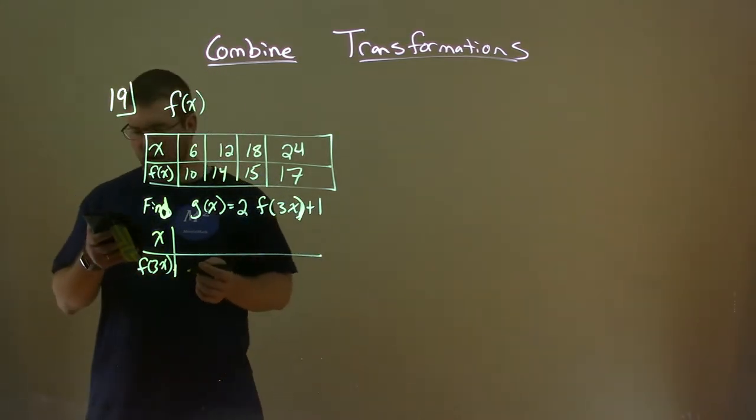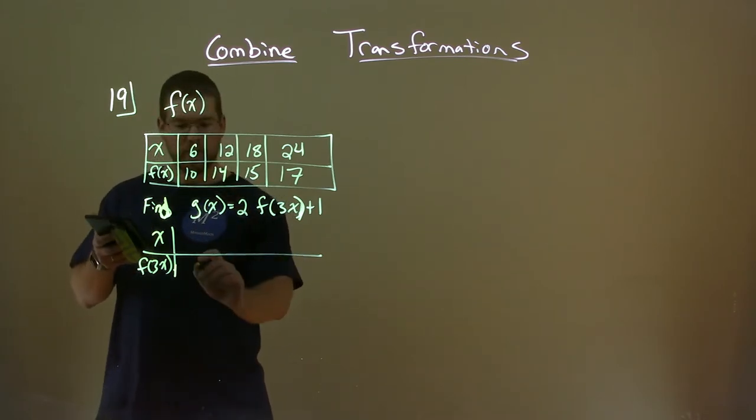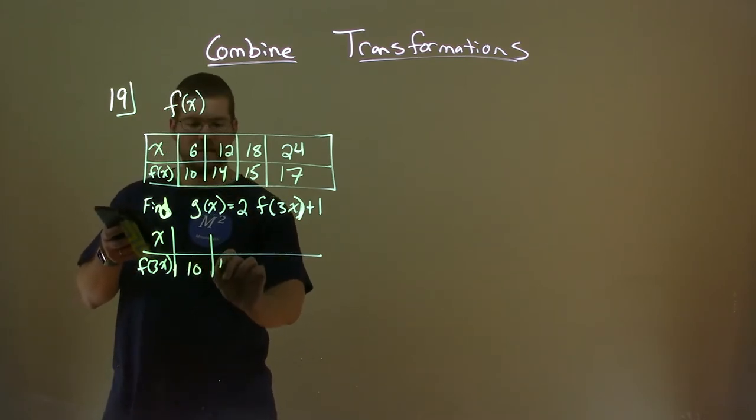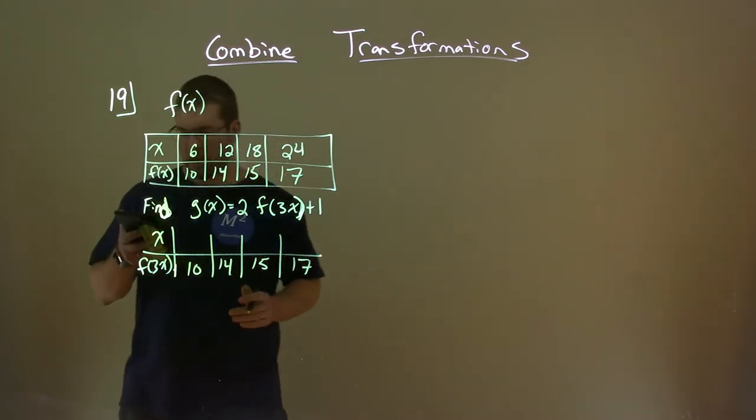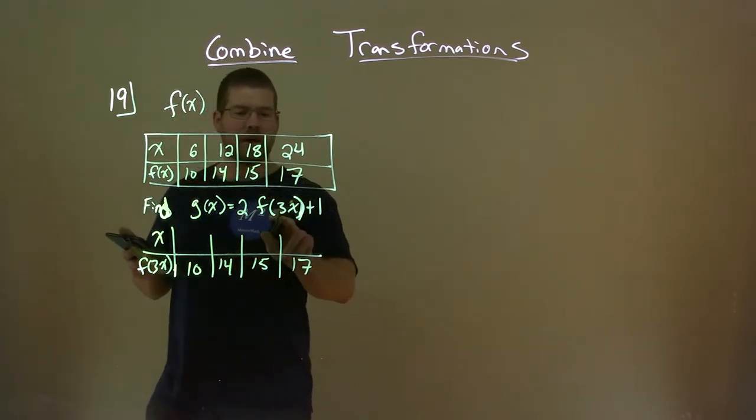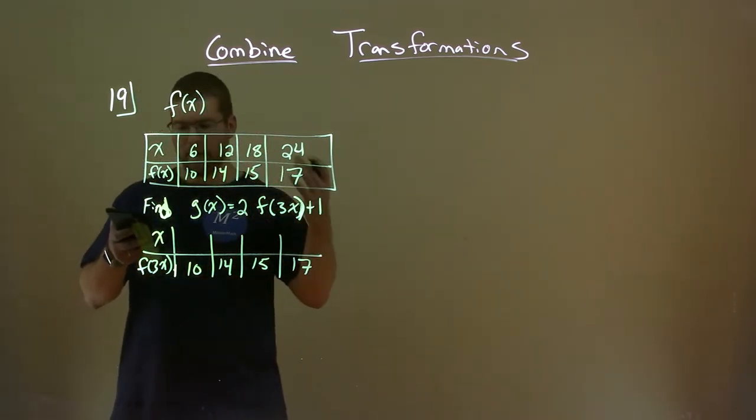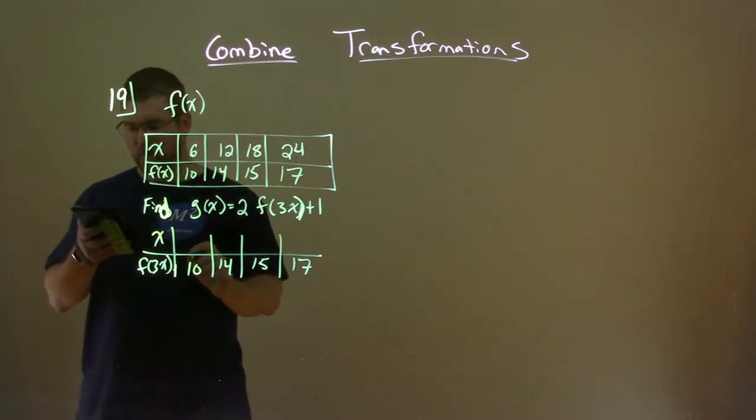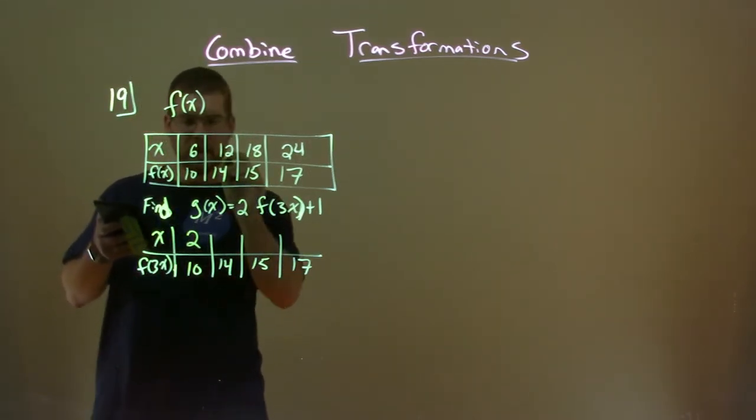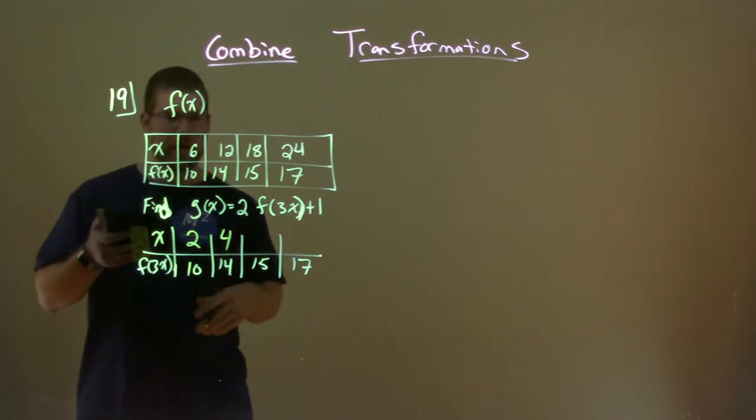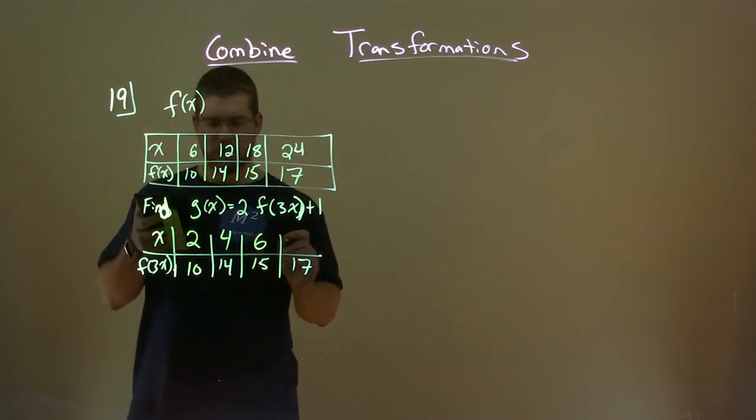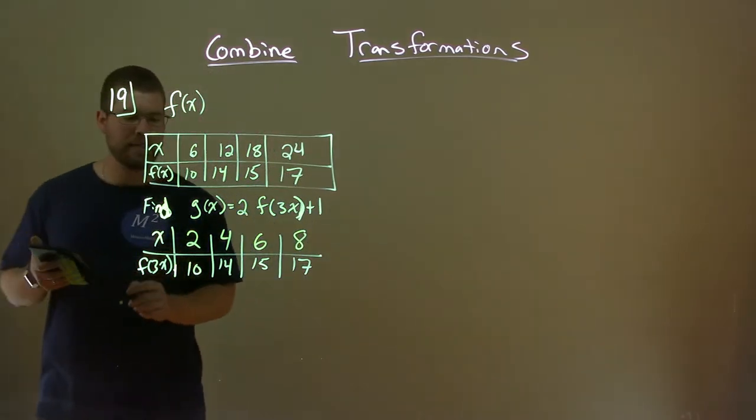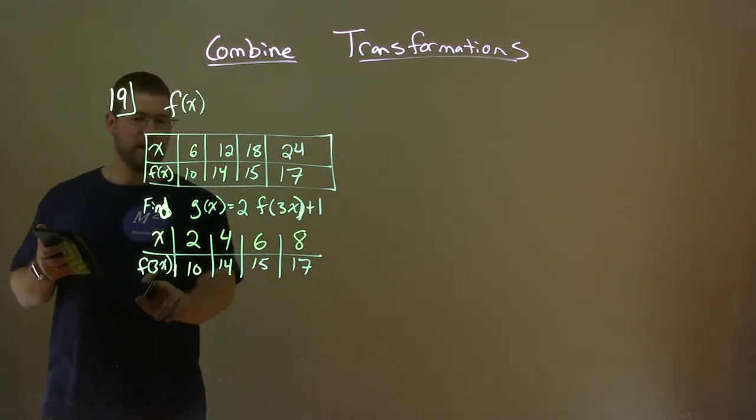So the same output values, 10, 14, combining what we've learned so far, 15, and 17, we see that we have a value of 3 here. So we're going to take the input values and multiply them by 1 third. So 6 times 1 third is 2, 12 times 1 third is 4, 18 times 1 third is 6, and 24 times 1 third is 8. So we have the first part here, f(3x).